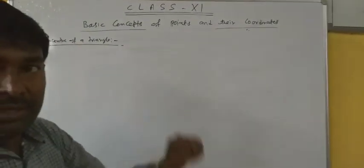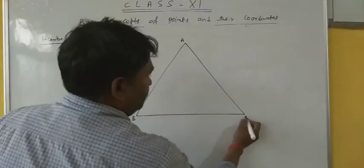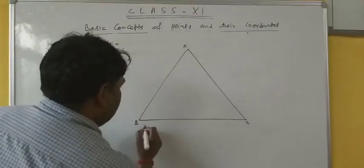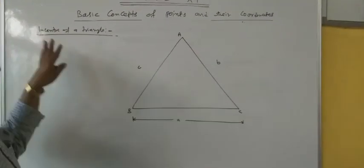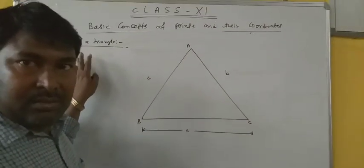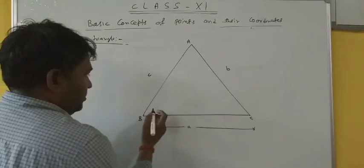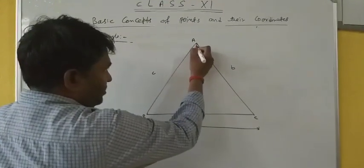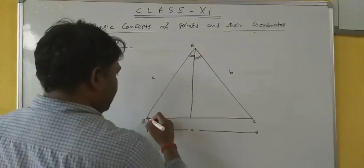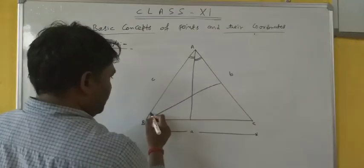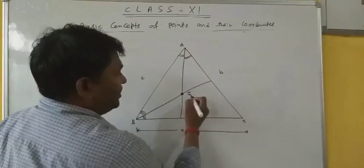Now for the in-center of a triangle. See, if there is a triangle ABC where the length of sides are a, b, and c. The in-center of a triangle is the point of intersection of angle bisectors. An angle bisector bisects the angle — this angle equals this angle. The point of intersection of angle bisectors is called the in-center, represented by I.